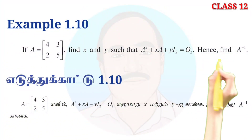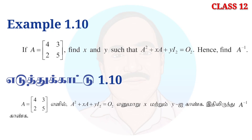If A is equal to [[4, 3], [2, 5]], find x and y such that A squared plus xA plus yI₂ is equal to O₂, the zero matrix.